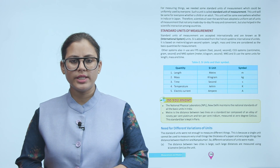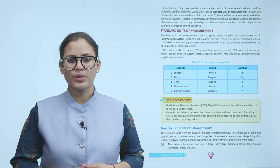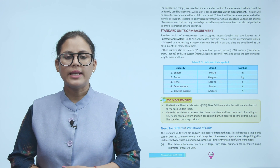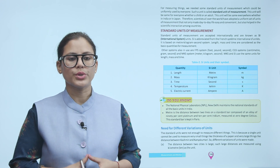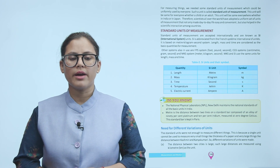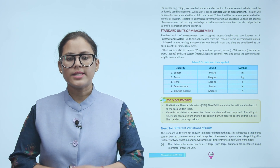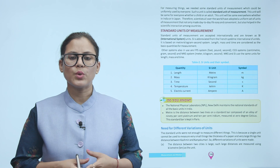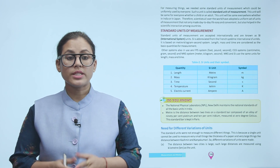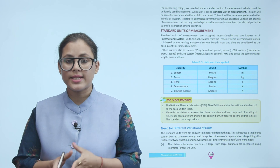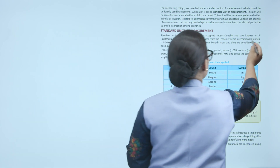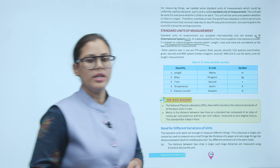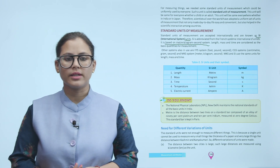Standard units of measurement are accepted internationally and are known as SI — International System of Units. SI is abbreviated from the French 'Système International'. It is based on the meter-kilogram-second system. Length, mass, and time are considered as the basic quantities for measurement. Other systems also in use are: FPS system (foot-pound-second), CGS system (centimeter-gram-second), and MKS system (meter-kilogram-second). MKS and SI use the same units for length, mass, and time.